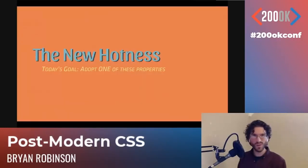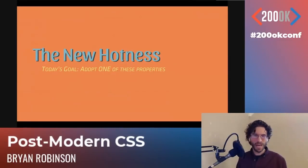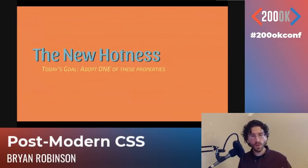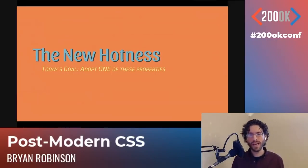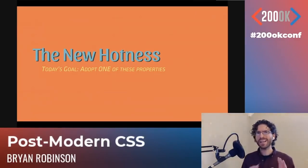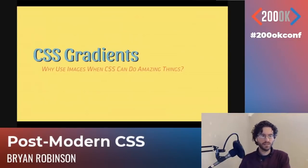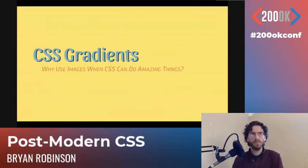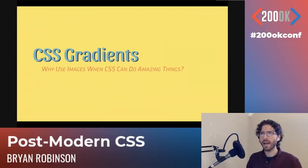My goal for you is to adopt at least one of these properties and tweet me about it. We're going to go back and forth between some graphical things and some layout things. Let's start easy — let's talk about CSS gradients. Back in the day, to do gradients we'd have to do image crops and slices, background repeating, and stuff like that. Why use images when CSS can do amazing things out of the box? Gradients are supported across the board — about 98% support worldwide for CSS gradients.